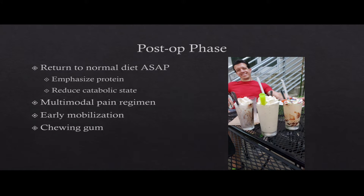Sitting up puts the diaphragm in an advantageous position — they breathe better, sats are better, less risk for lung consolidation. Ideally get them walking. Chewing gum — a surgeon told me about a study showing chewing gum prevents ileus. It stimulates intestinal motility. We tell patients after abdominal surgery to chew gum for at least an hour, at least three times a day. It's remarkable — it doesn't cost anything and helps reduce their risk for ileus.